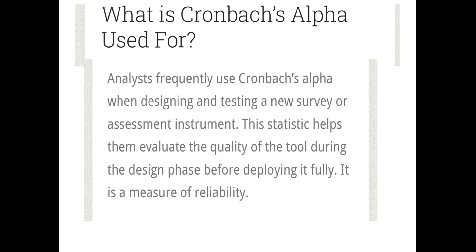What is Cronbach's Alpha used for? It is used for designing a survey tool, questionnaire, or research instrument, and it checks whether one item on the tool is related to another item — whether the tool is constructed to measure a single characteristic. For example, if you are assessing complications of diabetes mellitus, all questions should be related to complications of diabetes mellitus. If one item relates to diabetes and another to cardiovascular disease or hypothyroidism, there is too much variability. All questions must relate to a particular topic for the tool to be highly reliable.